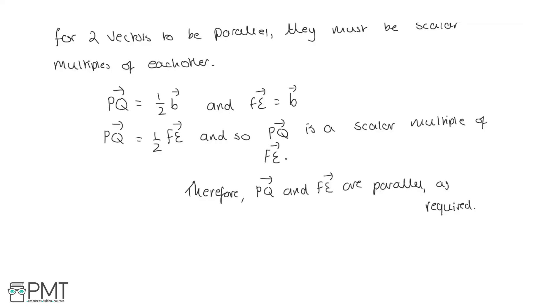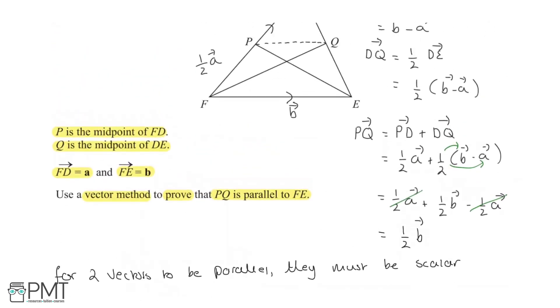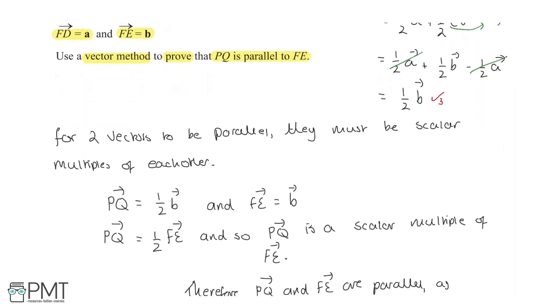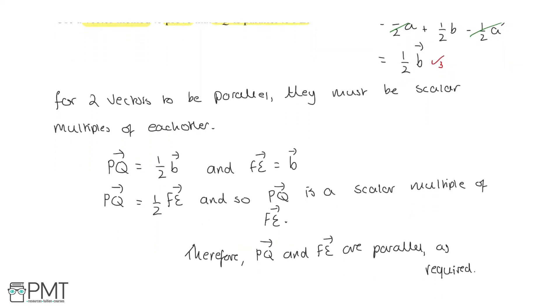Now, this question is worth four marks. The first mark you get comes from finding DQ. Your second mark comes from a method to find PQ. Your third mark actually comes from finding PQ correctly. And then your fourth mark is a complete proof, as we have done, so getting the value of PQ. So, acknowledging with a statement that they have to be a scalar multiple, so stating that PQ is a scalar multiple of FE, and stating somewhere that, therefore, they are parallel.